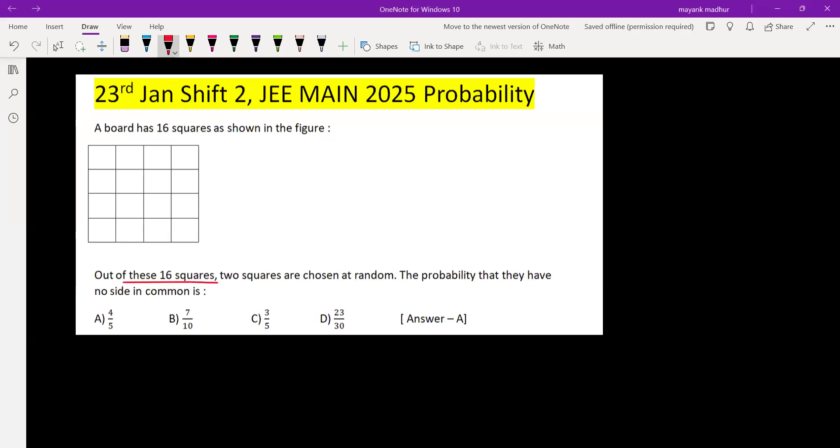Out of these 16 squares, two squares are selected at random. Find the probability that they have no side in common. We'll use total minus negation. First, we are selecting two squares out of these 16 squares, so the number of elements in the sample space is 16C2, which is 16 times 15 by 2, equals 120.